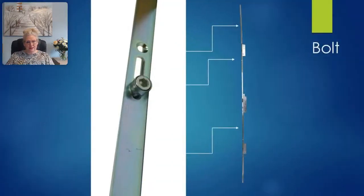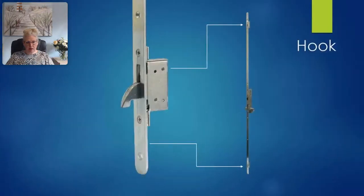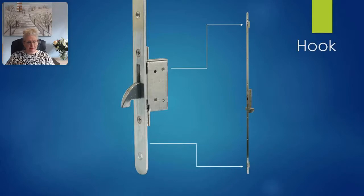A bolt is a locking point that extends from the door into the frame to hold it closed. A hook is also a locking point that extends from the door into the frame and holds the door closed. It differs from the bolt in that it is hook-shaped rather than straight.